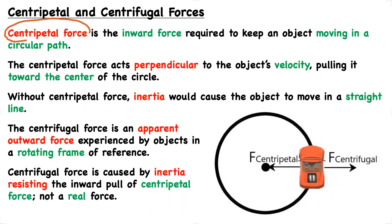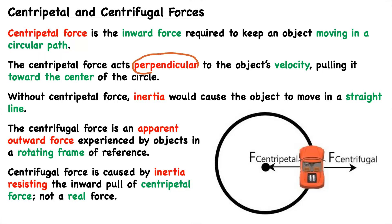The centripetal force is the inward force required to keep an object moving in a circular path. The centripetal force acts perpendicular to the object's velocity, pulling it toward the center of the circle. Without the centripetal force, inertia would cause the object to move in a straight line. For example, consider a car moving in a fully circular path: the centripetal force acts perpendicular to the velocity — 90 degrees — pointing toward the center of the circle.